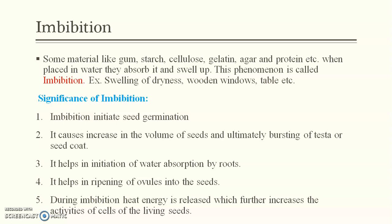Imbibition causes an increase in the volume of the seed, ultimately leading to bursting of the testa (seed coat). As the seed absorbs water, the starch and contents inside absorb water, increasing volume, which applies pressure on the outer covering of the seed, causing it to burst and facilitating seed germination. It also helps in the initiation of water absorption by the roots — first, imbibition occurs at root hairs, and that is how water absorption begins.